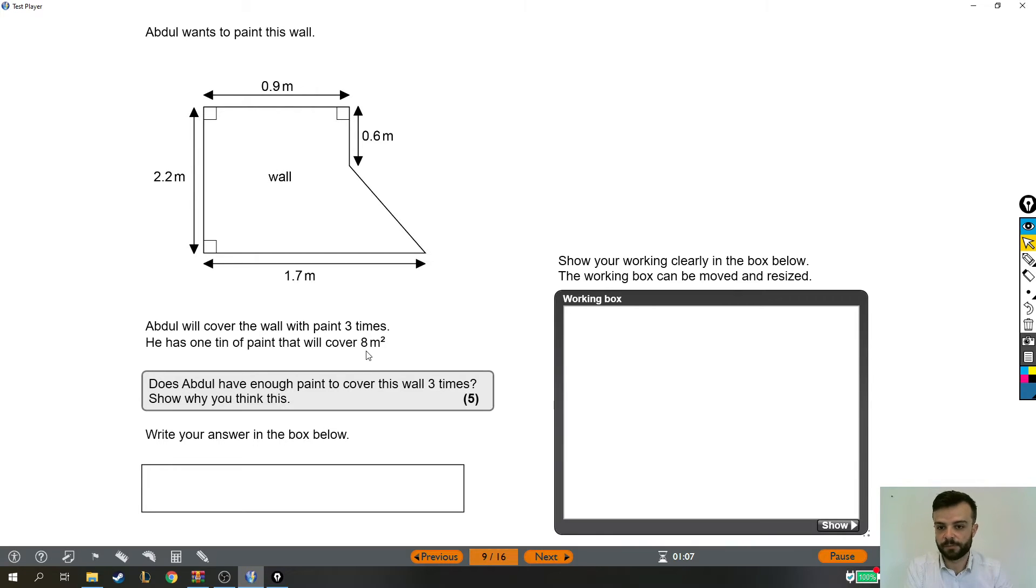Now, if we know his tin of paint covers eight metres squared, we're going to need to work out the area of the wall. And then we're going to times that by three because he's got to paint it three times. That's how much paint he's going to need to use. But how are we going to find the area of this wall? Well, when we're dealing with shapes like this that are made up of two more normal shapes, we can just cut it into pieces.